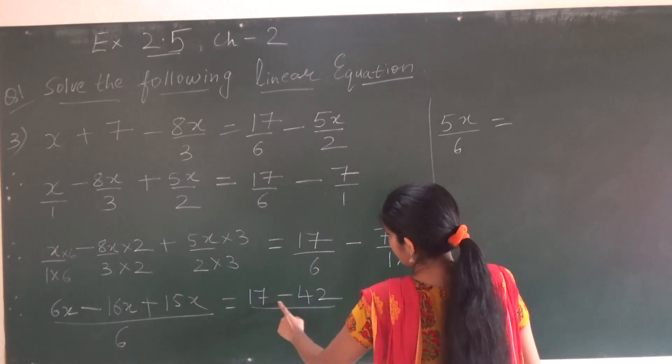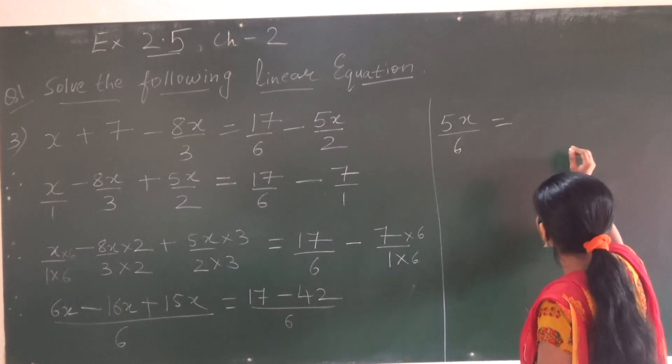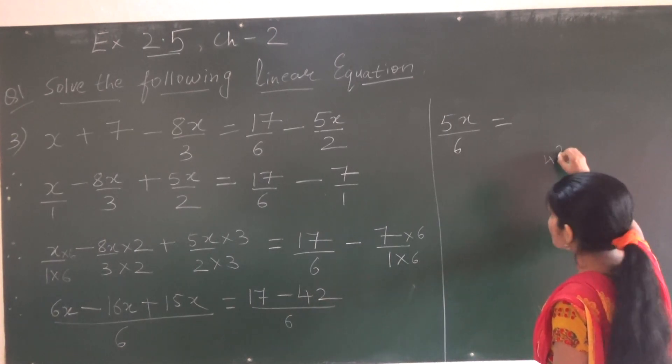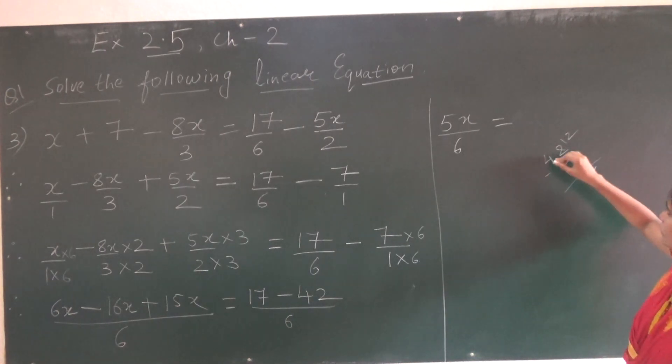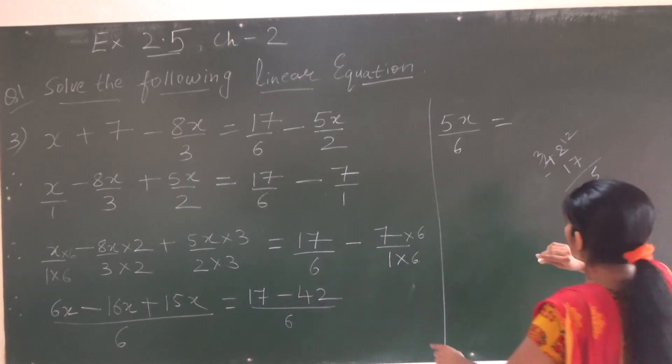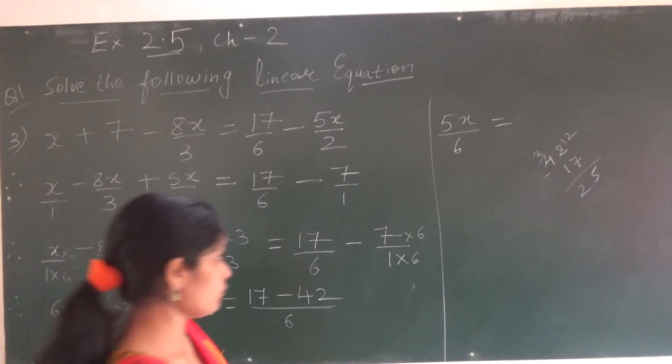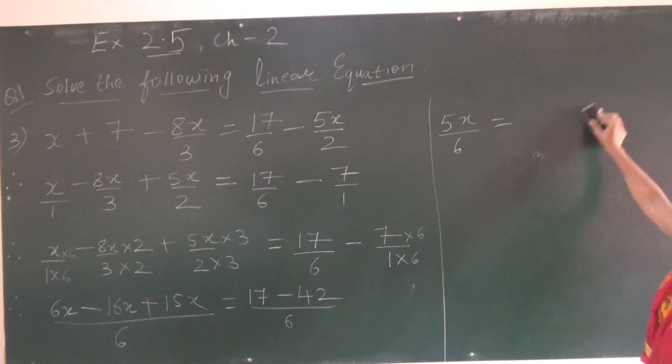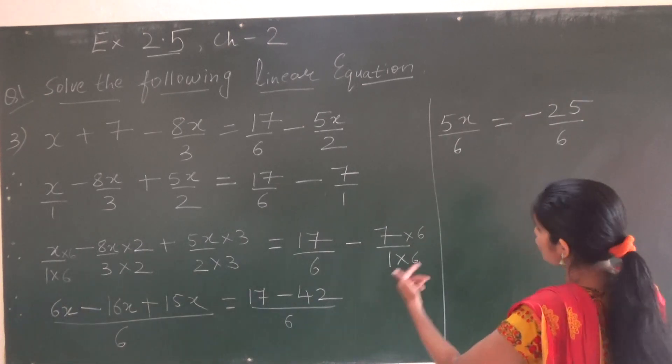And this side 17 minus 42. So we have to do 42 minus 17. So what we will get? 42 minus 17. So this will be 12. 12 minus 7 will be 5. Here 3 and 3 minus 1 will be 2, so 25 we are getting. We have to keep greater numbers sign, so it will be minus 25. So minus 25 upon 6.